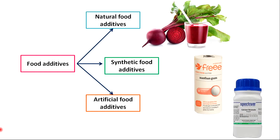Food additives may have a natural origin in the sense that they may be found existing naturally, forming part of the indigenous component of the food — for example, beetroot juice used for coloring purposes. Or they may be synthetic but replicas of substances found naturally in the foodstuff — for example, xanthan gum,